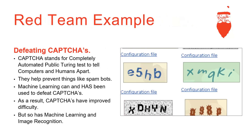A quick example of a red team machine learning exploit: CAPTCHAs are those annoying boxes that pop up asking you to prove you're not a robot. They help prevent spam bots, but machine learning has actually been used to defeat CAPTCHAs, and as a result CAPTCHAs have had to become more robust over time. Google's CAPTCHA, for example, is very difficult to beat with machine learning, but probably theoretically possible.